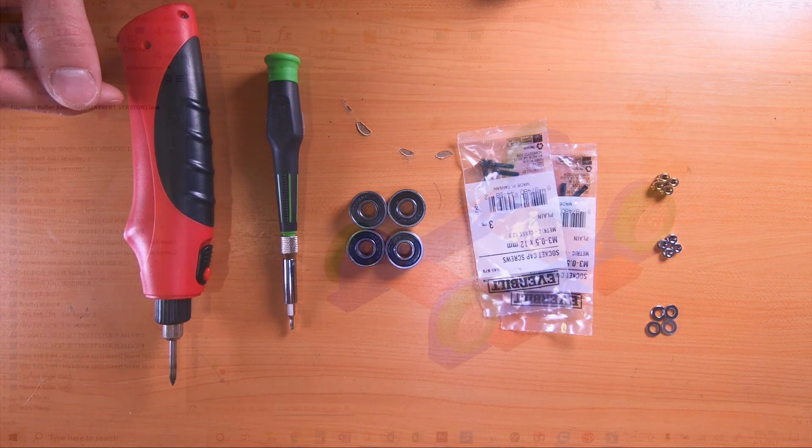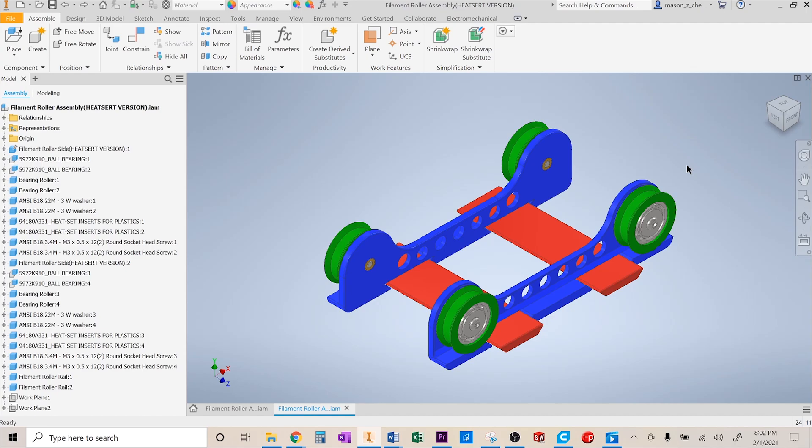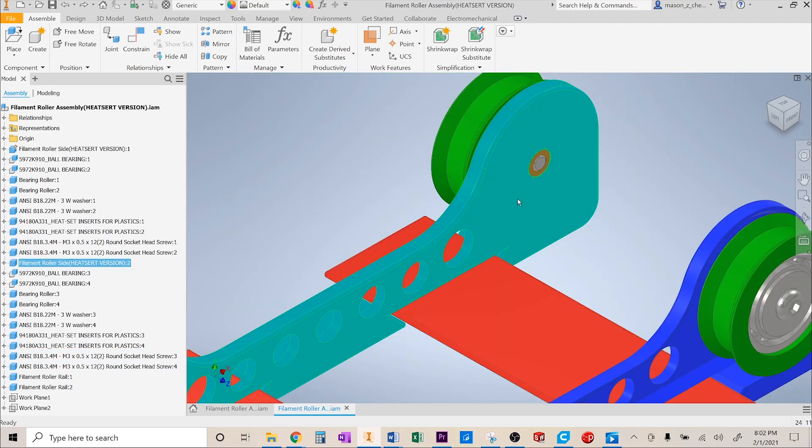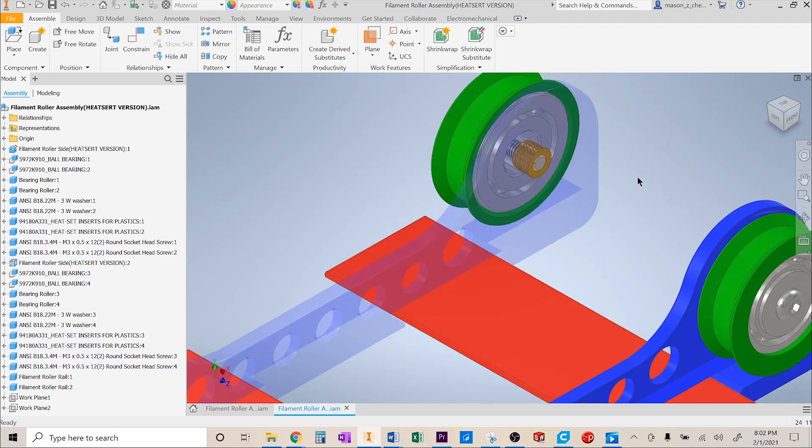Now let's talk about the model. Okay, here's the filament roller model. Now, this is the heat cert version, as you can see by the brass heat cert right over here. I'm going to make the side transparent so you can see a little bit better. And then just past that, you can see the 608 bearing.